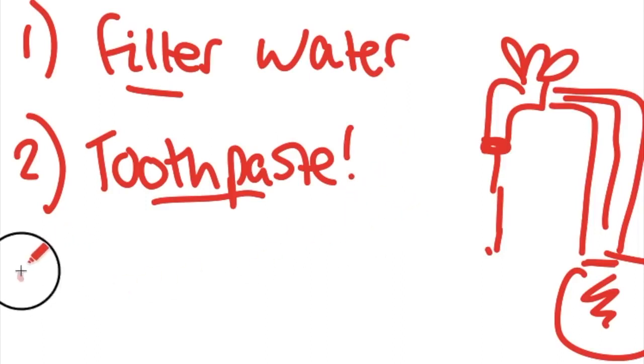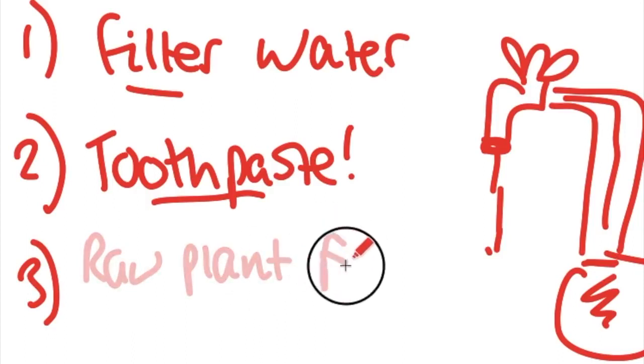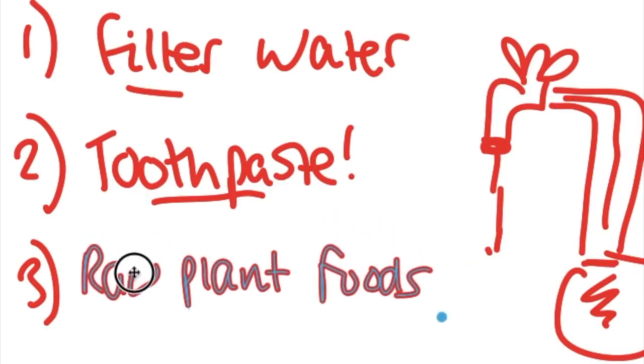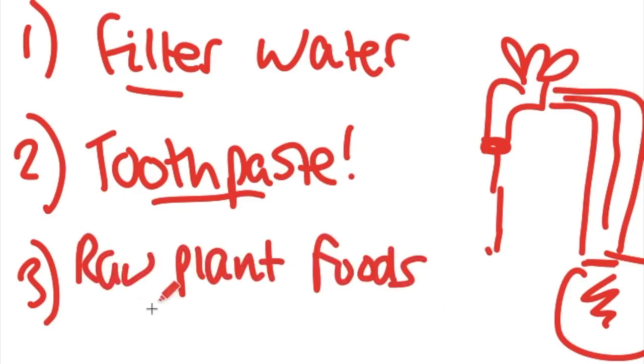Third, there's the holistic approach where you eat more raw plant-based organic foods. I'm a vegan, but you can get a healthy diet just by avoiding highly processed sugary foods, sugary drinks, and that sort of stuff, limiting your fluoride intake that way.